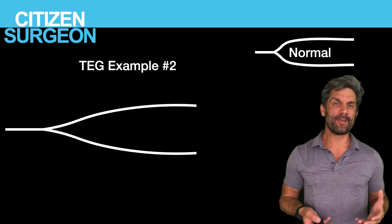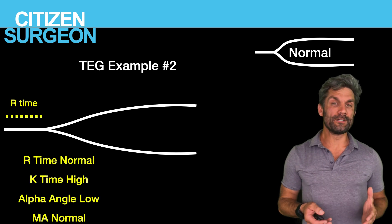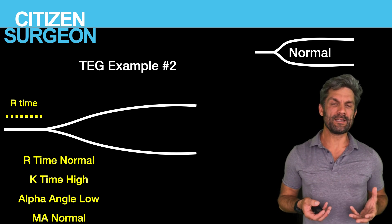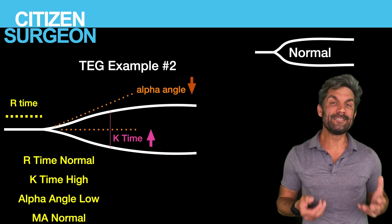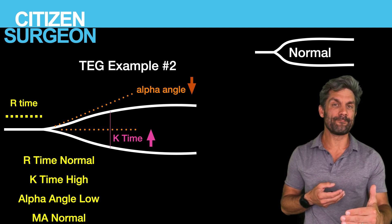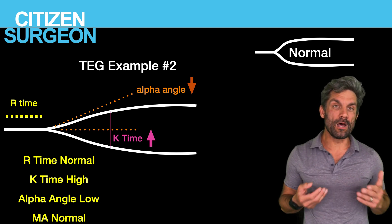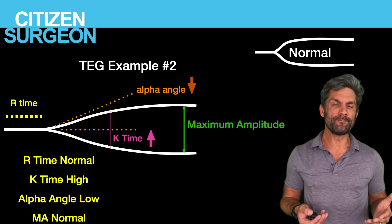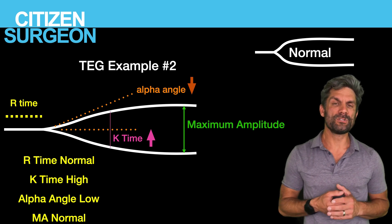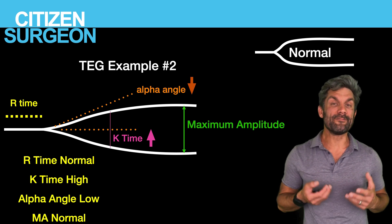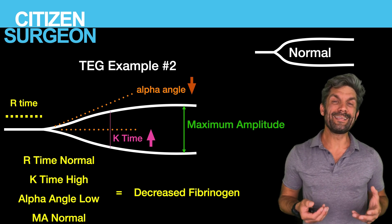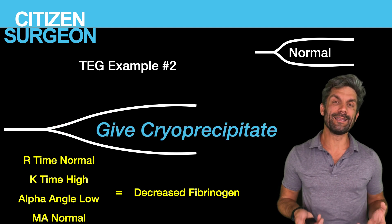In the next waveform, we have a normal R time — coagulation factors are fine — but the strength of the clot is decreased. We have an increased K time and a decreased alpha angle: it's taking longer to reach 20 millimeters and the rate of clot formation is low. Maximum amplitude and LY30 are normal. This means decreased fibrinogen. What would we need to give? Cryoprecipitate, because it has very high levels of fibrinogen.